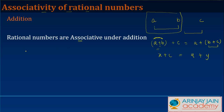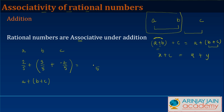Let's check associativity for rational numbers with specific values. Let a = 2/5, b = 3/5, and c = −2/5. First, we compute (a + b) + c: putting a bracket over a + b, we get 3/5 is common, 3 − 2 gives 1, so a + b = 2/5 + 1/5... wait — 2/5 + 1/5 = 3/5.